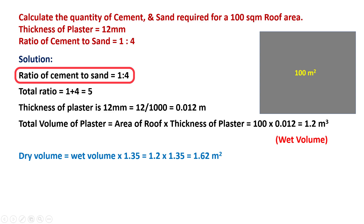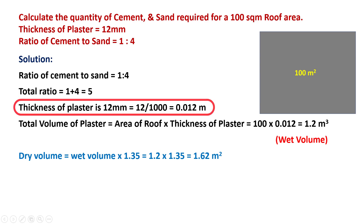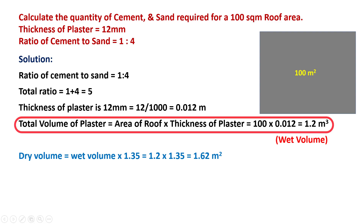The ratio of cement to sand is 1 to 4, so the total ratio will be equal to 1 plus 4, which equals 5. The thickness of plaster is 12 mm or 0.012 meter. The total volume of plaster equals the area of the roof multiplied by the thickness: 100 square meters × 0.012 = 1.2 cubic meters.